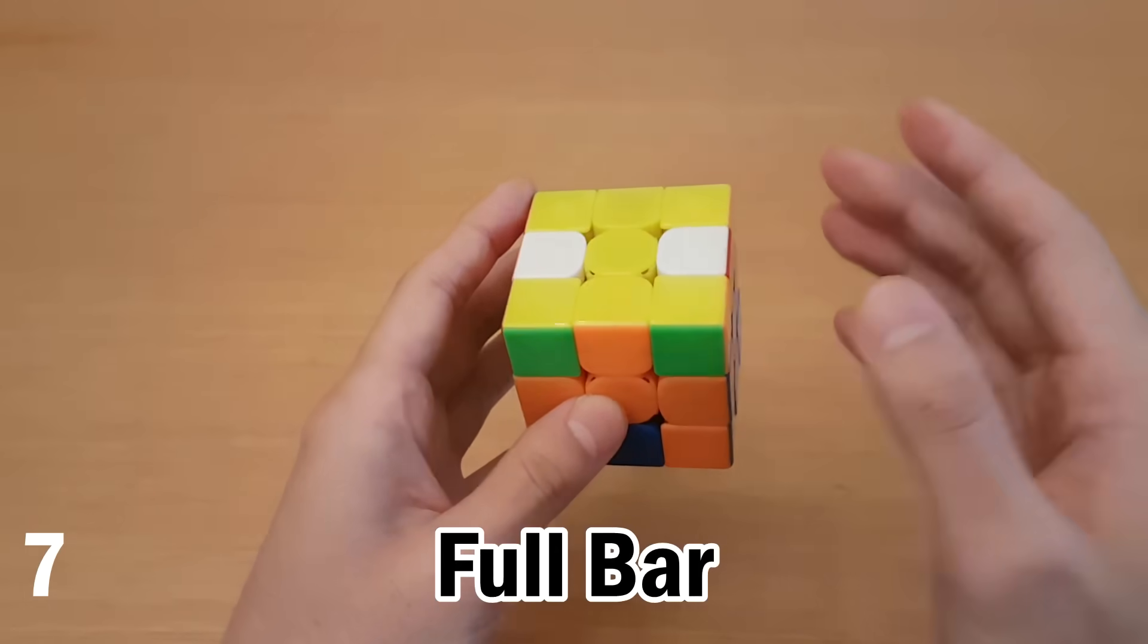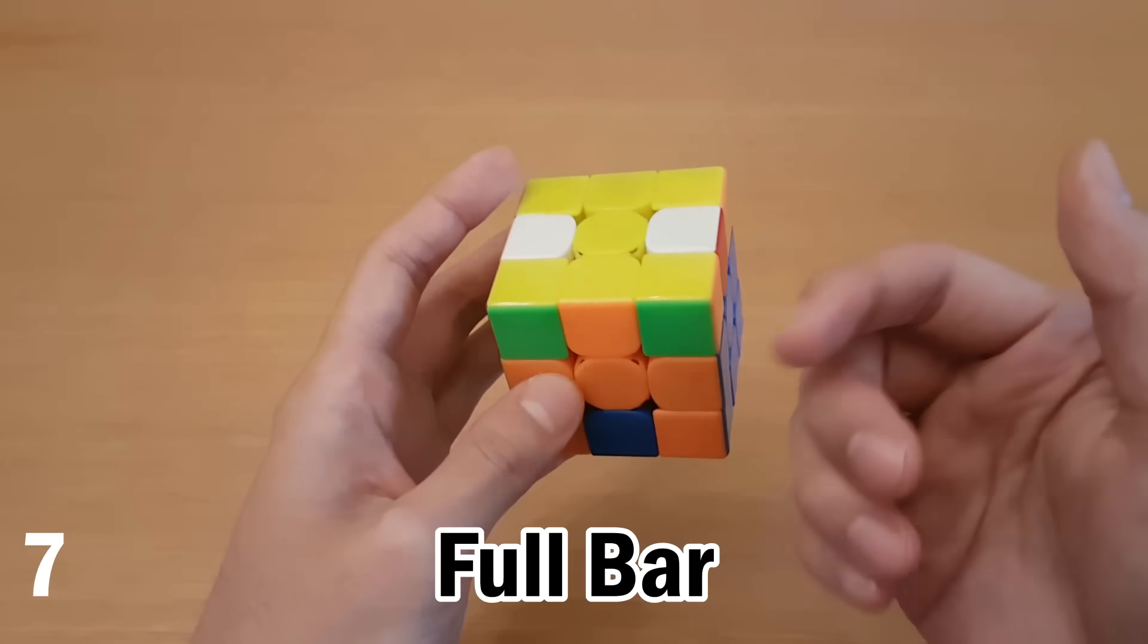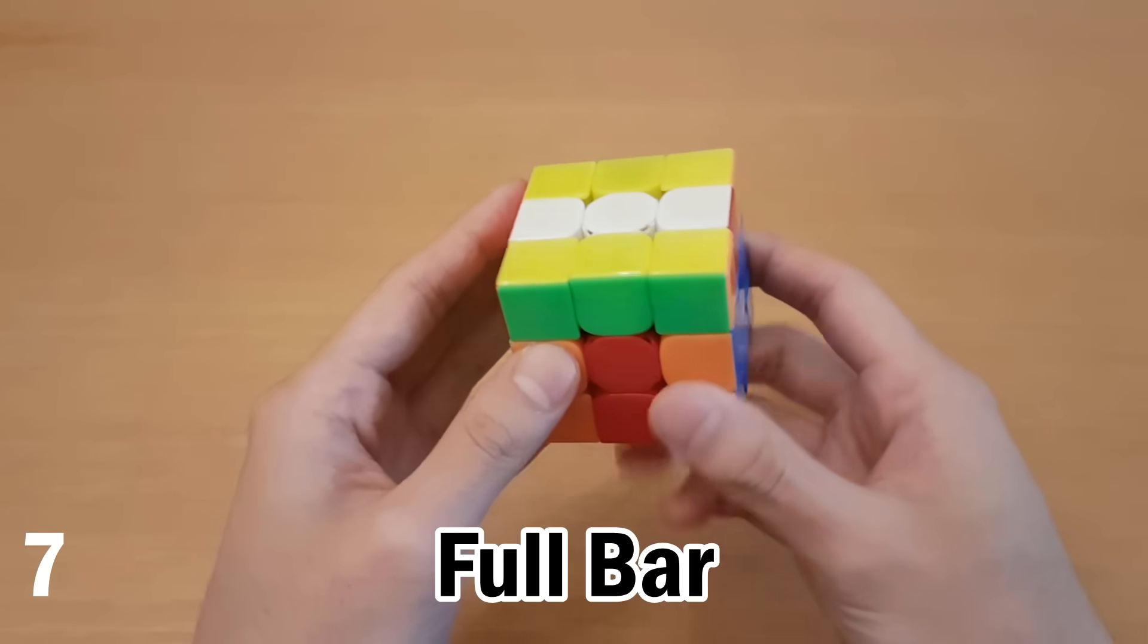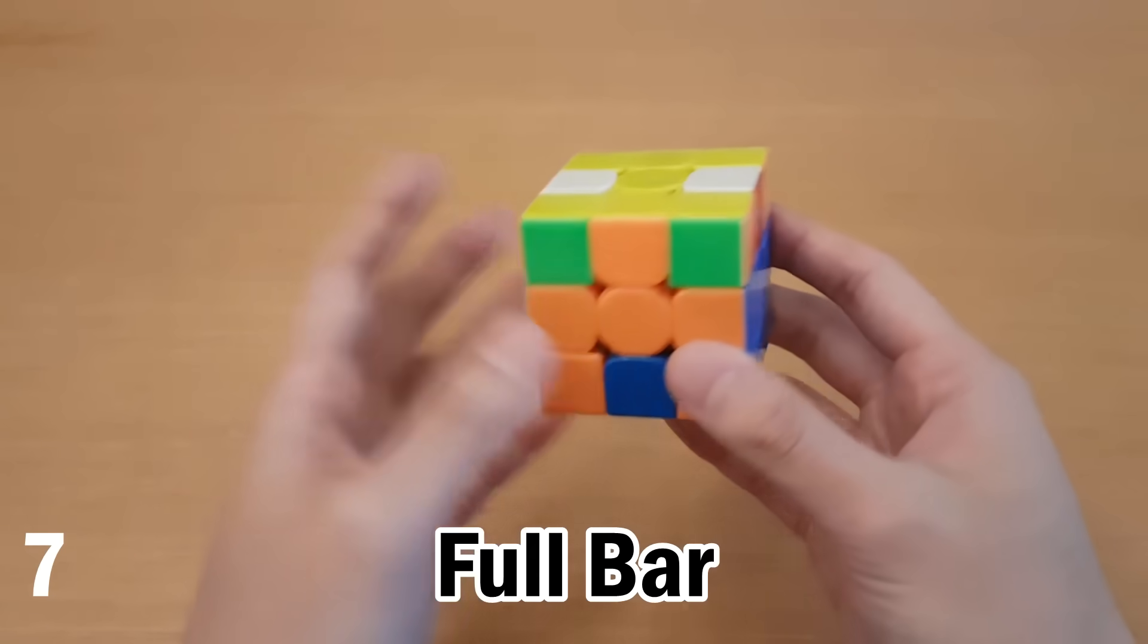Now this one is the made bar case because this time when I do M2, this center is already wrong between them. So obviously my M2 will make a full bar. So the first step you do after the M2 is the same as before.